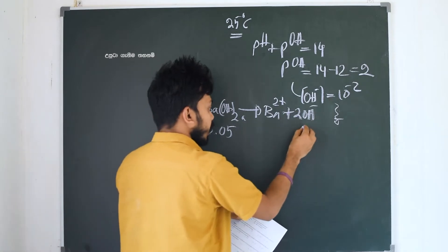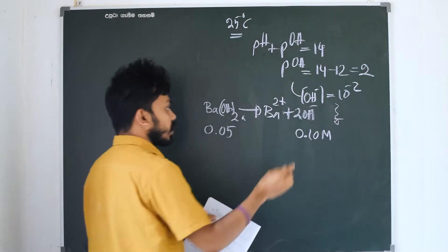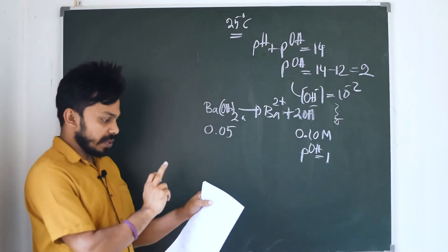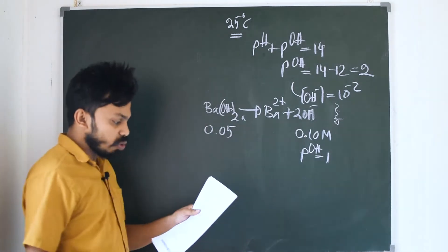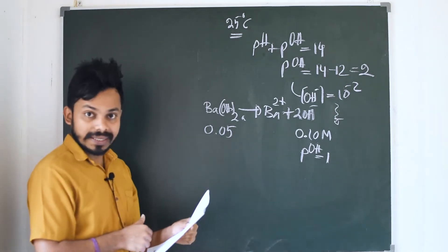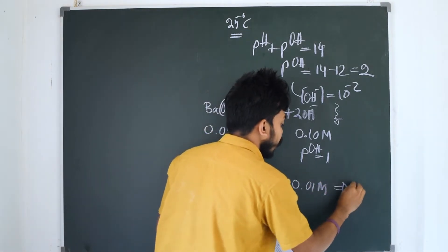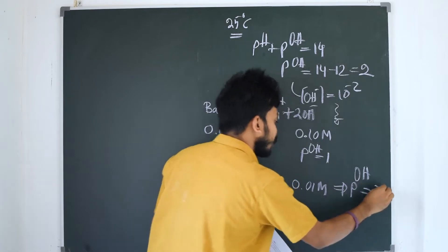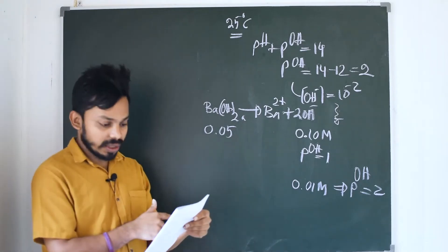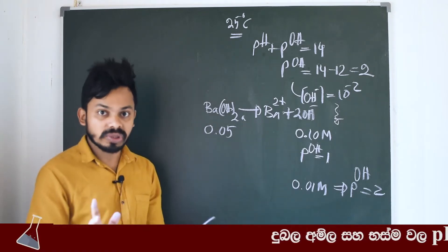The same thing is 1.5 decimeter. This is the pH of 1.5. This is calcium hydroxide. Calcium hydroxide will be OH⁻. This will be 1 meter. This is COH.